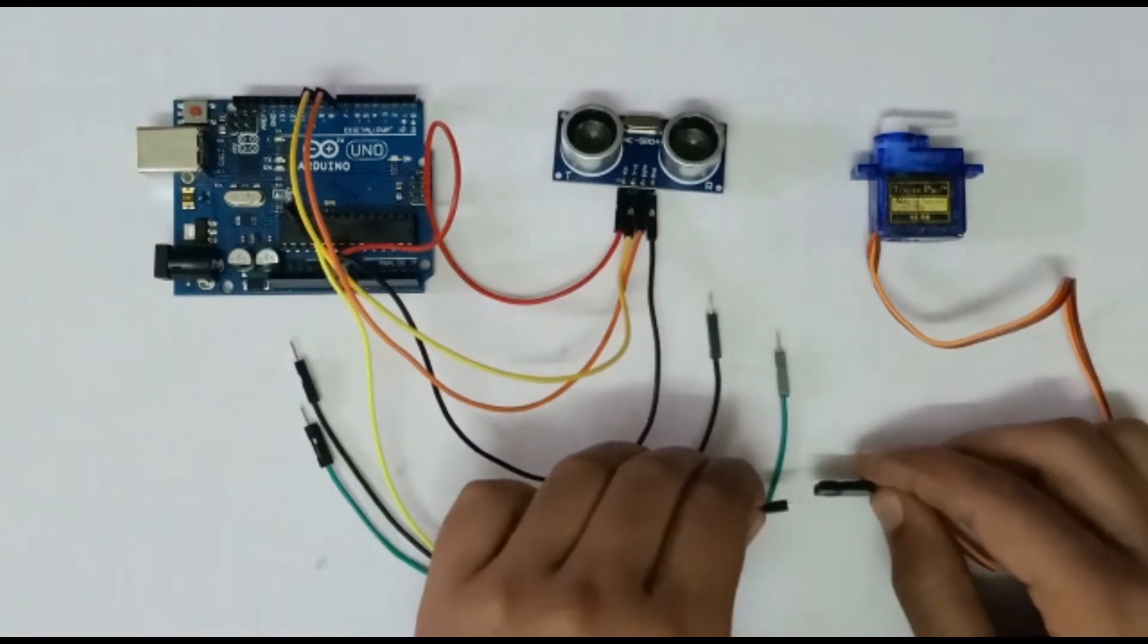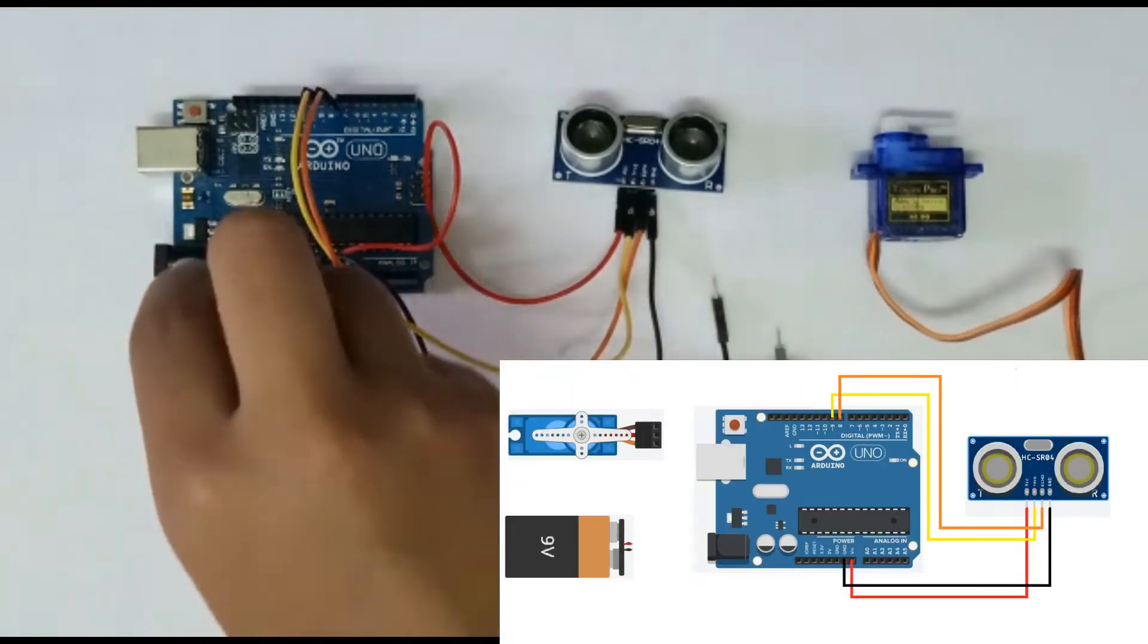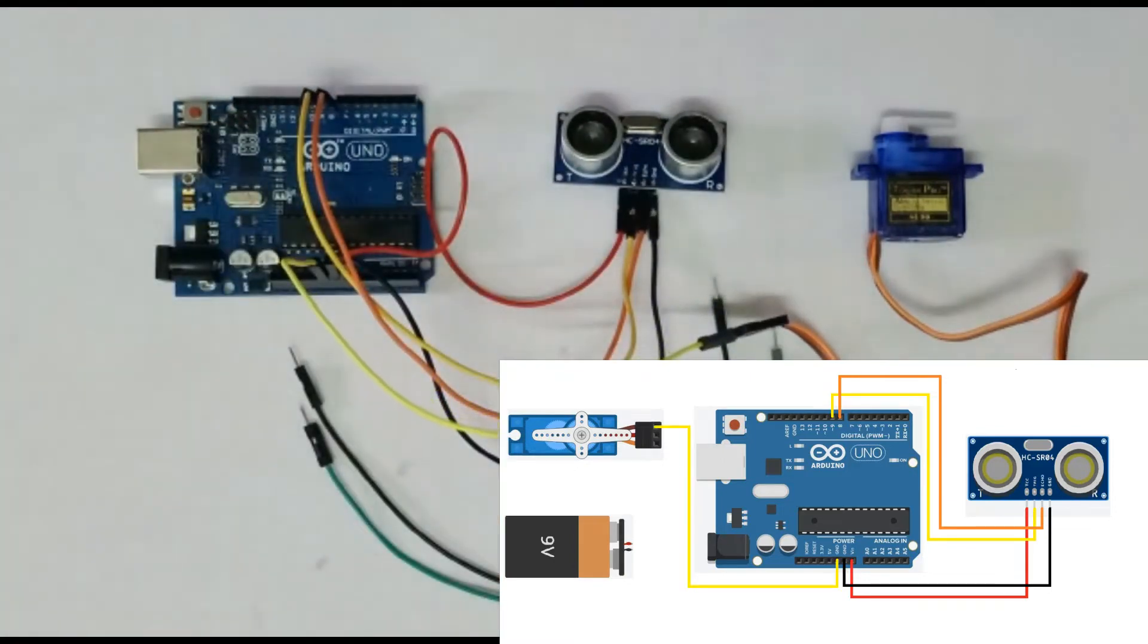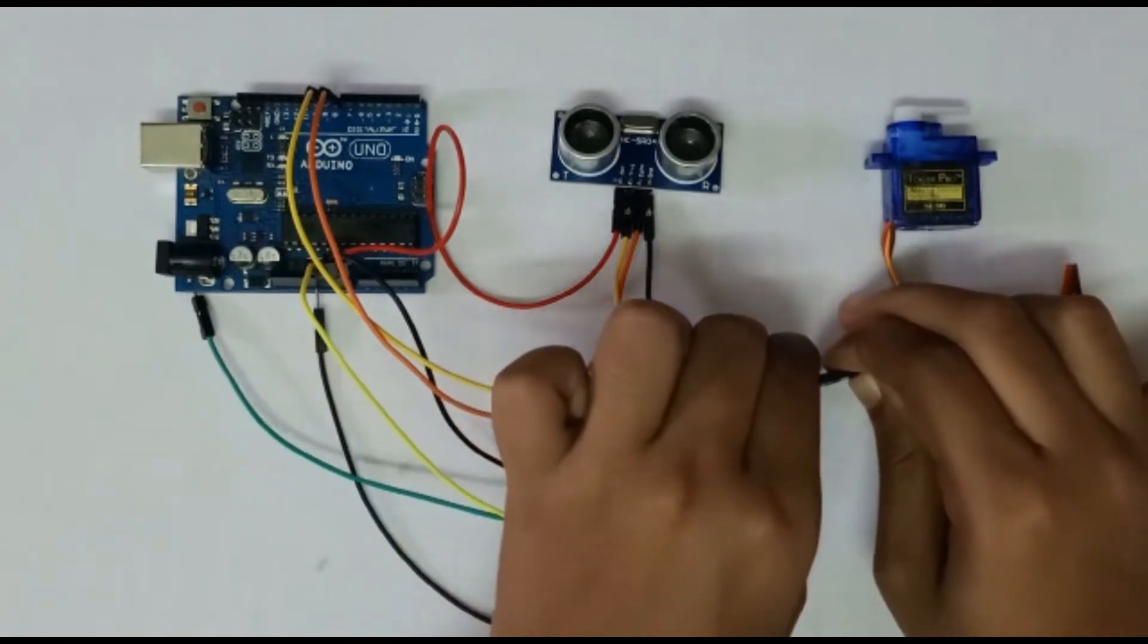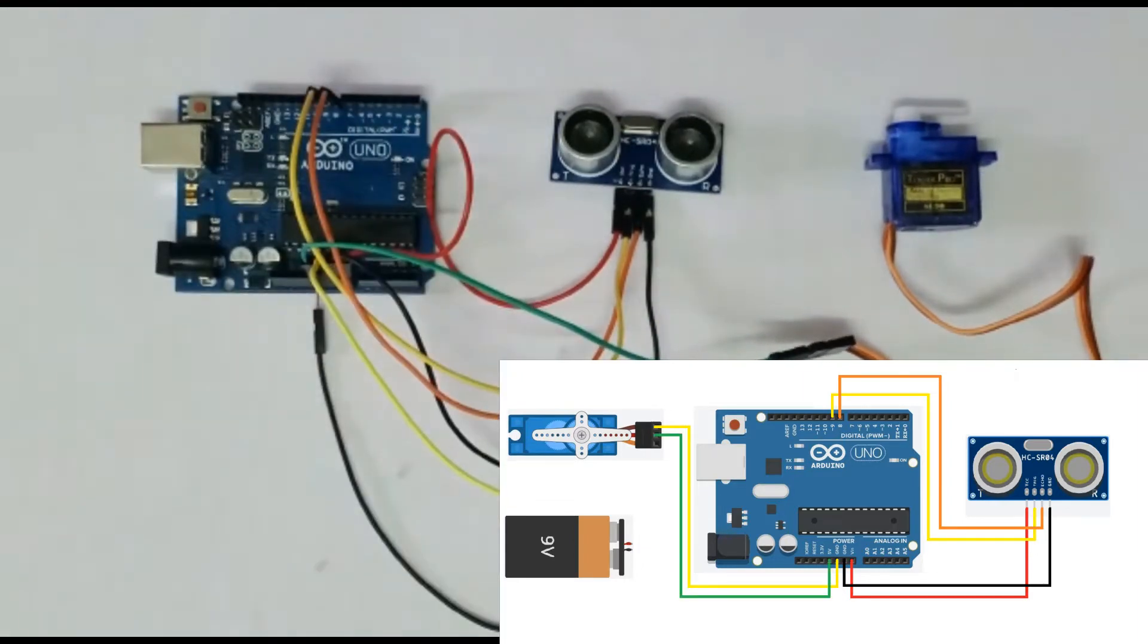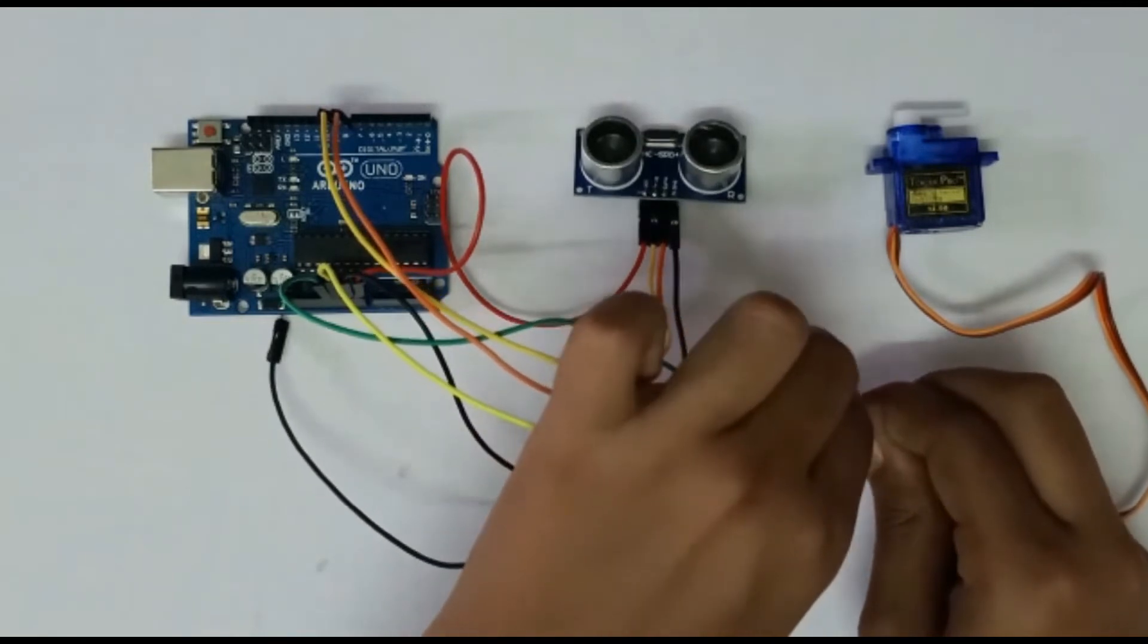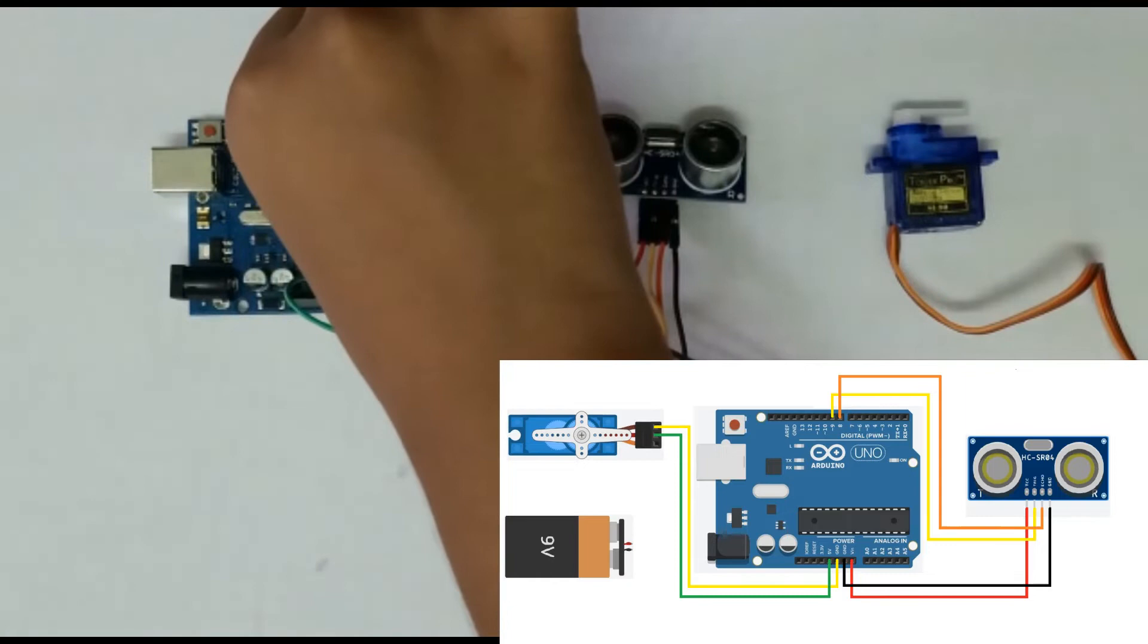Take a wire and put it in the brown colored wire in the servo motor and put that wire to the GND pin in the Arduino board. Take another wire and put it in the red colored wire in the servo motor and put that wire to the 5 voltage pin that is written as 5V in the Arduino board. Now take a wire and put it in the orange colored wire in the servo motor and put that wire to the 7th pin in the Arduino board.